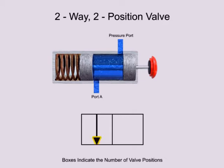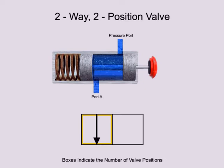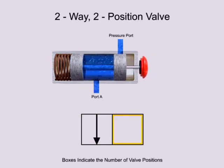A solid arrow indicates the direction of liquid flow. The first position of this valve allows fluid to flow from the pressure port to port A, so an arrow is drawn in the first box to indicate fluid flow. A T indicates that a port or way is blocked or closed. This valve's first position has no ports blocked, but its second position blocks both. Therefore, two T's are added to illustrate the lack of fluid flow in the second position.